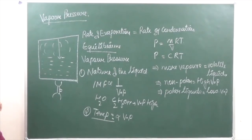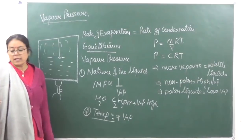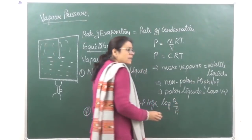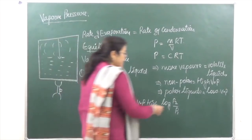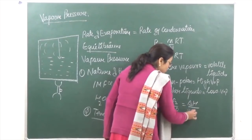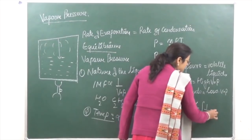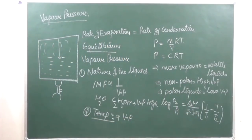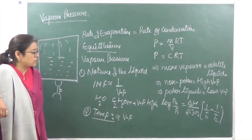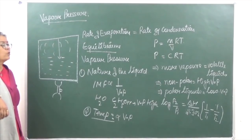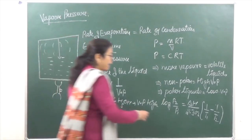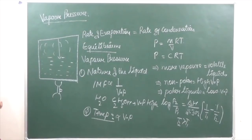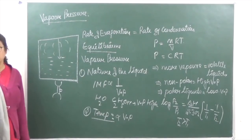The vapor pressure can be calculated with the help of an equation known as the Clausius-Clapeyron equation. According to it, if we are considering the vapor pressures of a liquid at two temperatures: log(P₂/P₁) = ΔH/2.303 × (1/T₁ − 1/T₂). This allows us to calculate vapor pressure at temperatures T₁ and T₂, where T₂ is higher. ΔH here refers to the latent heat of vaporization.